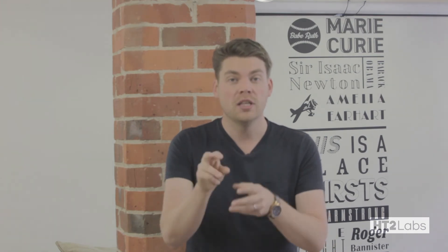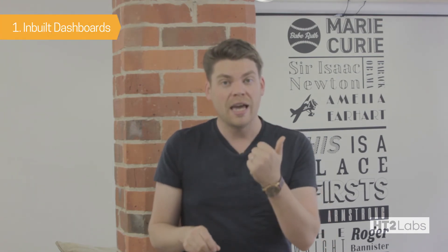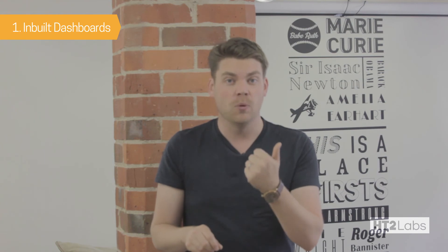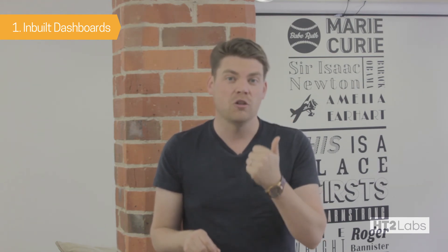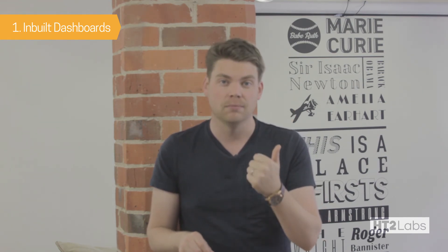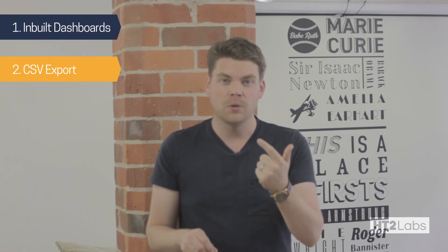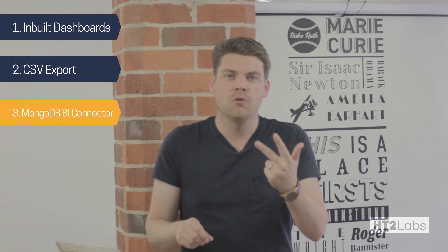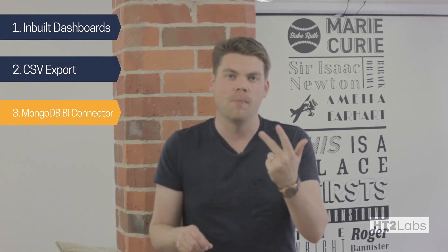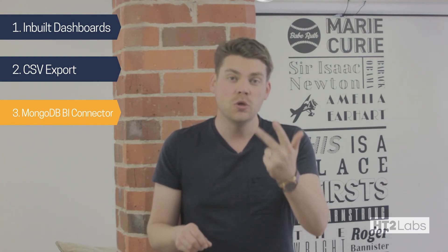So three ways of increasing complexity and depth that you can go to with the data in your Learning Locker. Level one: use our inbuilt dashboards — this will give you a great insight straight away into what's going on with your data. Level two: a CSV export, take it to Excel. Level three: connect it to a business intelligence tool like Tableau or Power BI using the Mongo BI connector.